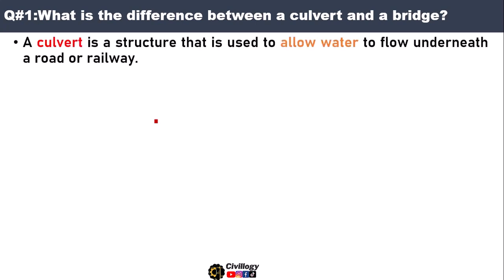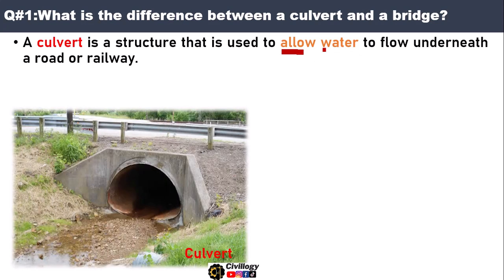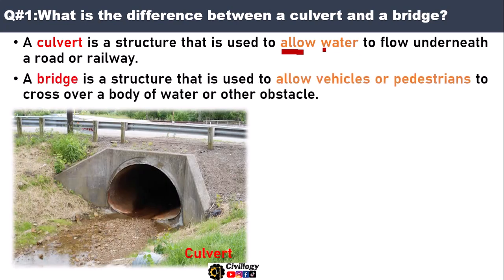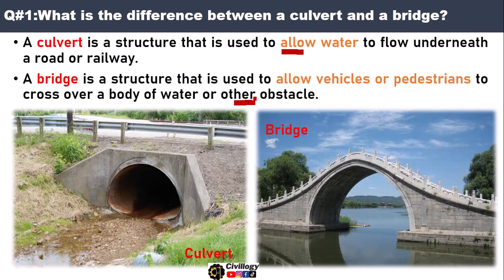Question number one, asked during interview: what is the difference between a culvert and a bridge? A culvert is a structure that is used to allow water to flow underneath a road or railway. Whereas a bridge is a structure that is used to allow vehicles or pedestrians to cross over a body of water or other obstacles, as you can see in the pictures.